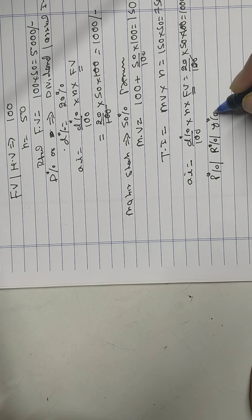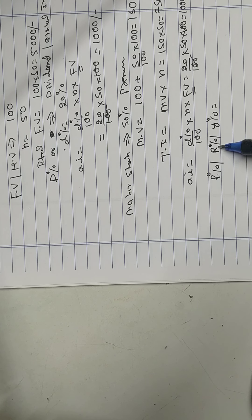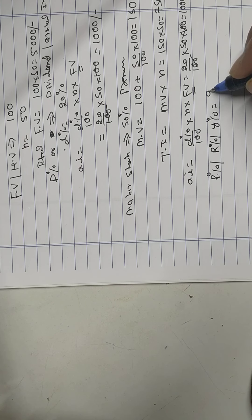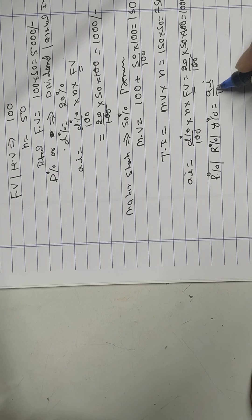So 20 upon 100, number of shares is 50, face value 100. He also got 1000 rupees.